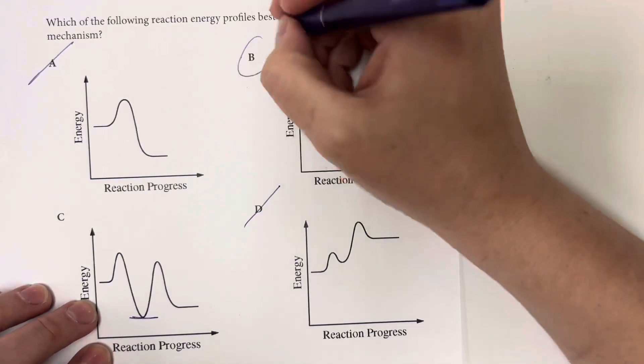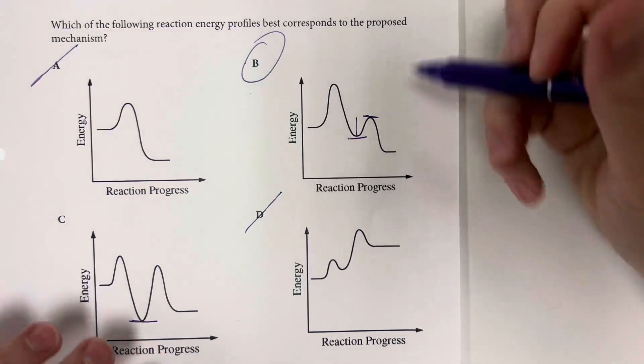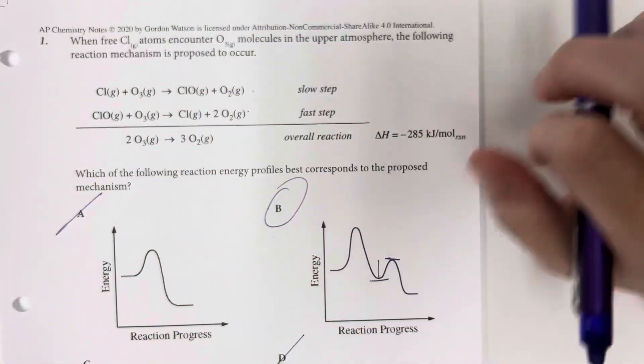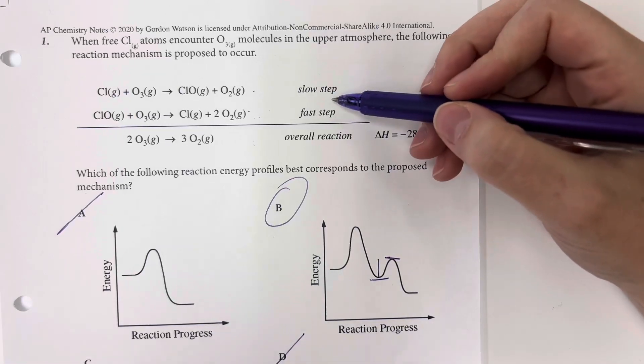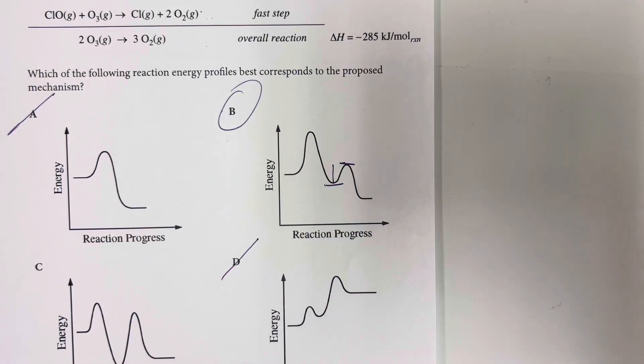So option choice B is going to be my best choice for a graph that most closely matches this two-step equation where I am slow and then fast, and I have an overall decrease in energy within the system.